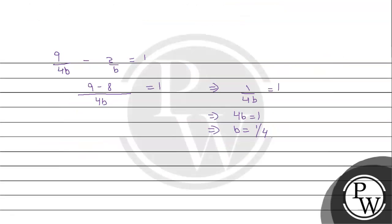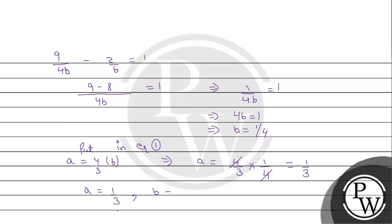Putting b = 1/4 into equation 1, where a = (4/3)b, it becomes a = (4/3) × (1/4). The 4's cancel out, so a = 1/3. So now we have a = 1/3 and b = 1/4.